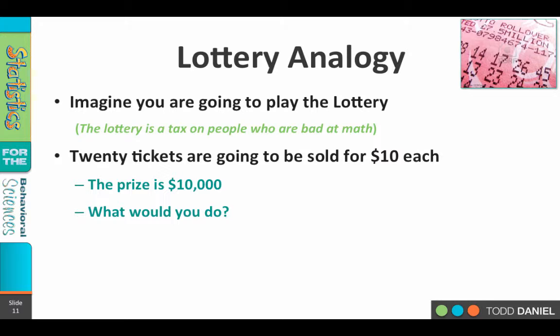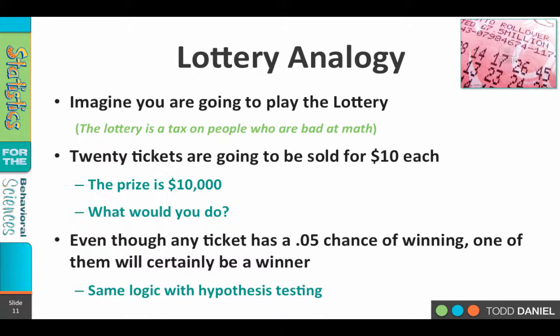Let's say we have a really special lottery. The prize is $10,000, but only 20 tickets are going to be sold, and the tickets cost $10 a piece. What would you do in this circumstance? Well, if you're smart, you would buy all 20 tickets. You'd spend $200 but you'd win $10,000 — that's a no-brainer. Buy up all of the tickets. Which one of those tickets would win? You don't know, and it doesn't matter. One of those 20 tickets is going to win, regardless of whether you can predict which one at the outset.